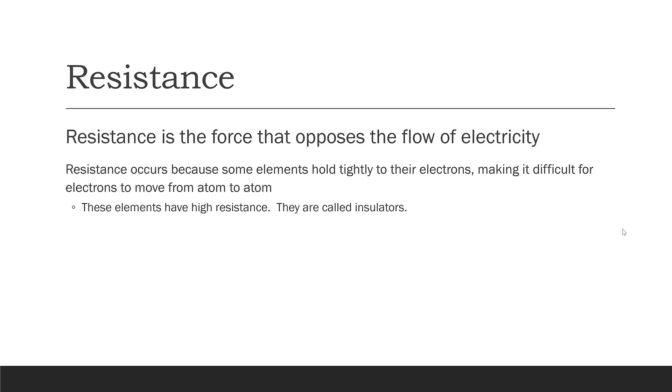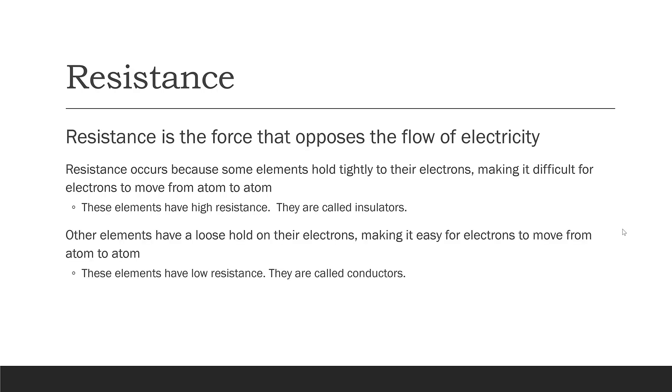Other elements hold on to their electrons much more loosely, and that makes it easy for electrons to move from atom to atom. These elements have low resistance, and they are called conductors. And the unit of resistance is the ohm, and it's abbreviated with omega, this symbol which is the Greek letter omega.